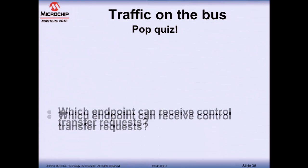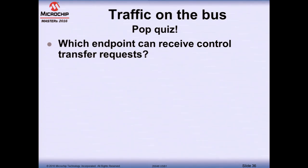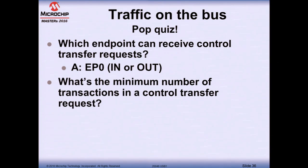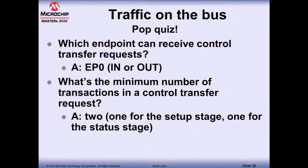Pop quiz: Which endpoint can receive a control transfer request? Endpoint zero, either IN or OUT — IN for data to be sent to the host, OUT for settings sent from the host. What's the minimum number of transactions in a control transfer? Two — one for the setup stage and one for the status stage, with the optional data stage in between.